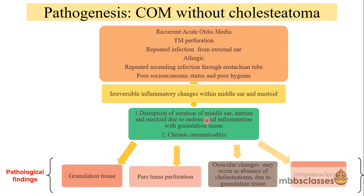The middle ear cleft is divided into several compartments by mucosal folds, and these different mucosal compartments get aeration through the aditus ad antrum. When there are inflammatory changes within the middle ear cleft, there will be formation of granulation tissue. Due to this edema and granulation tissue, it can lead to chronic otomastoiditis and certain pathological findings.